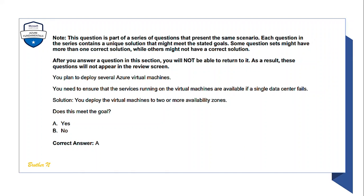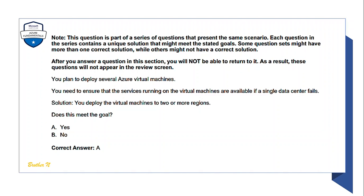Series question — you cannot return after answering. You plan to deploy several Azure virtual machines and need to ensure services remain available if a single data center fails. Solution 1: You deploy the virtual machines to two or more availability zones. Does this meet the goal? Yes — the answer is A.